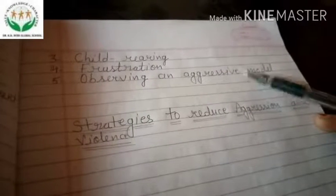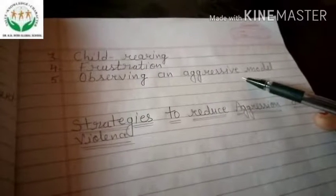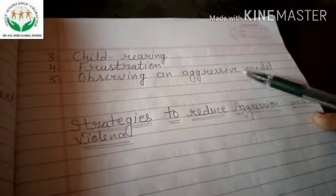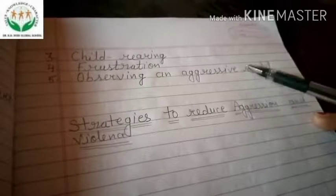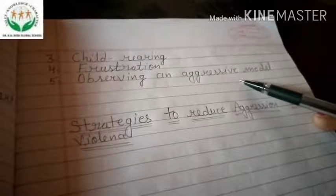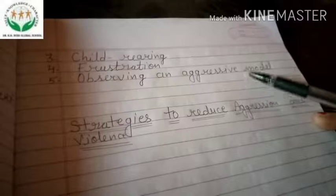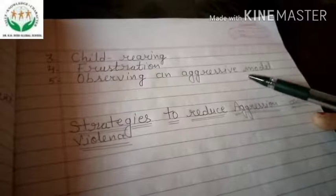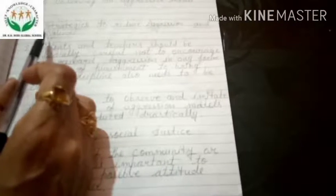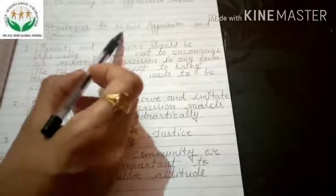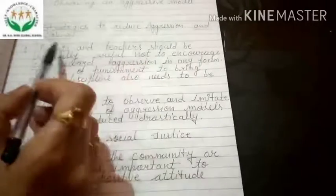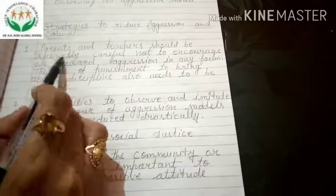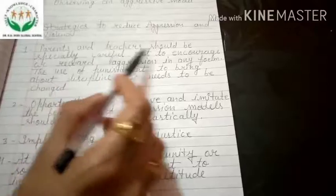The last cause is observing an aggressive model. Albert Bandura and his collaborators showed the role of modeling in learning aggression — if a child observes aggression and violence on television, he may start imitating that behavior.